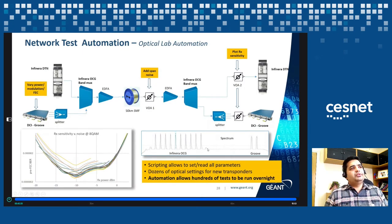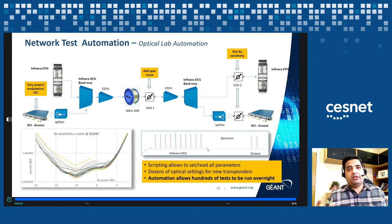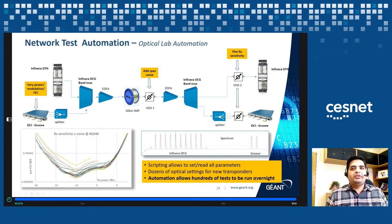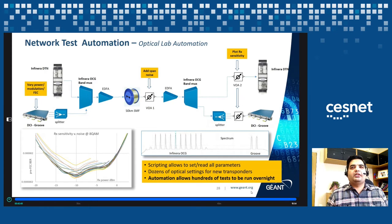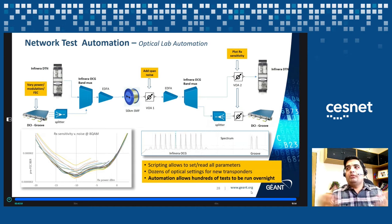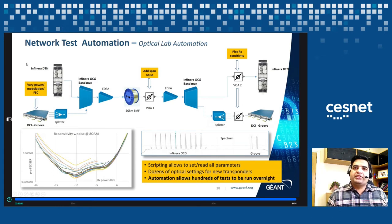On optical lab automation: we also automated testing for optical equipment. As we move towards the disaggregated open optical line system, we are testing different DCI equipment and open line systems. Scripting has allowed us to run hundreds of tests overnight — reading all parameters — so we come back in the morning and know what works and what doesn't. My colleague Robert worked on that, which helps us test new optical equipment efficiently in the Cambridge lab.